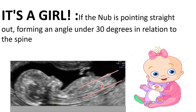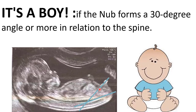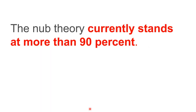So, in a nutshell: if the Nub or genital tubercle is parallel to the spine, you are going to have a baby girl. If the Nub is pointing towards the spine, it means that you are going to have a baby boy. The Nub theory currently stands at more than 90% accuracy. In my practice, when I applied this theory on ultrasound images, it was more than 80% accurate.